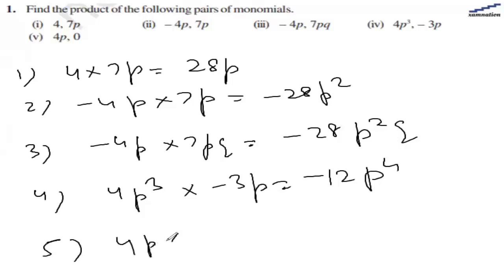Fifth is 4p multiplied by 0. So we get 0 because anything multiplied by 0 will get us 0.